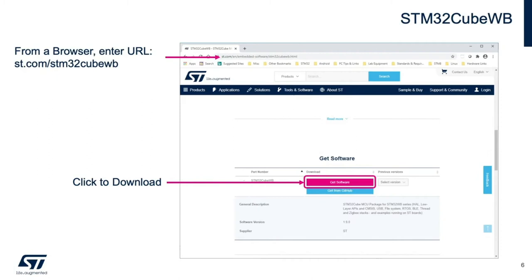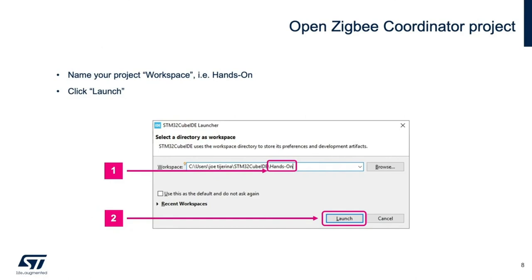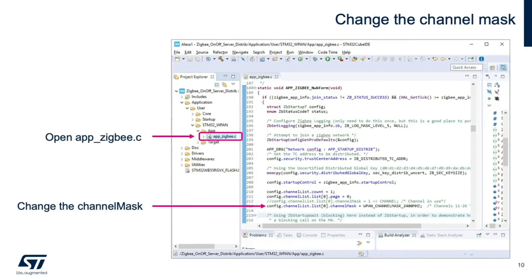Next, download the STM32 CubeWB package from st.com and unzip it. Then find the Zigbee on-off server distributed example and open the project by double-clicking on the .project file. Give your workspace a name and click Launch. Close the Information Center window to see the project workspace. Then open the app_zigbee.c file to edit and change the channel mask to WPAN_CHANNEL_MASK_24GHz to scan all 802.15.4 channels during the network discovery, since we don't know which channel the Amazon Echo Zigbee network will be on.